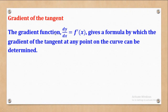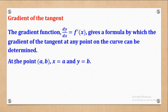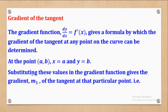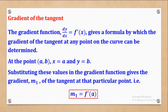Starting with the gradient of a tangent: the gradient function dy/dx equal to F'(X) gives the formula by which the gradient of the tangent at any point on the curve can be determined. Therefore at a point AB, where X equals A and Y equals B, substituting these values in the gradient function gives the gradient M1 of the tangent. So when I substitute for X, I will get F'(A), and that will be my gradient of the tangent M1.